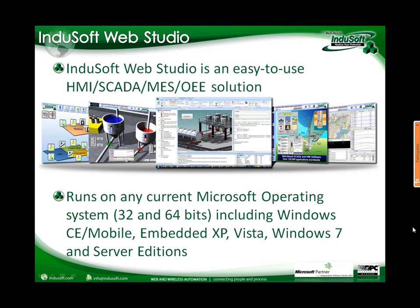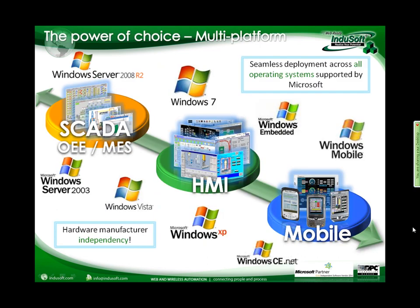The Software Studio includes a built-in protocol analyzer to monitor PLC communication, and supports online configuration — you can run the application on the machine and make changes from a remote computer; when you save and download changes to the runtime station, the changes take effect on the fly without shutting down the machine. All applications can be deployed on any Microsoft platform, from Windows Mobile and Windows CE to Windows Embedded, Windows 7, and Windows 2003/2008 Server, both 32 and 64-bit.